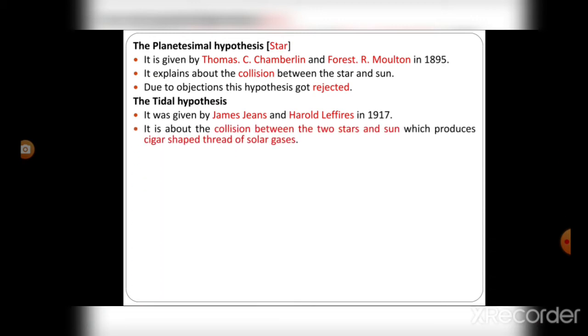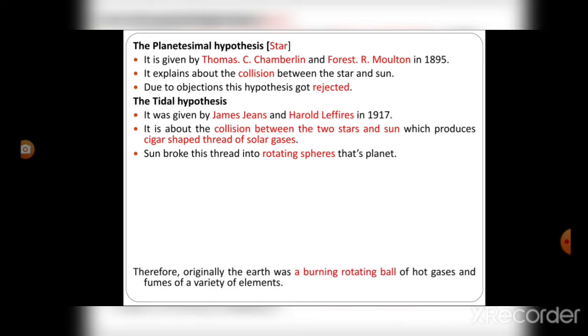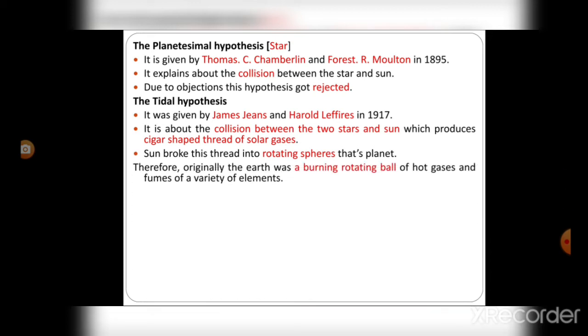It is about the collision between two stars and the sun which produces a cigar-shaped thread of solar gases. Sun broke this thread into rotating spheres, which became planets. Therefore, originally Earth was a burning rotating ball of hot gases and fumes of a variety of elements.